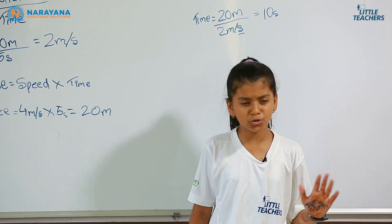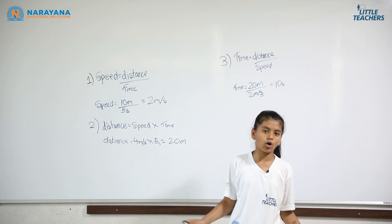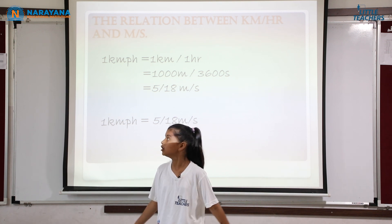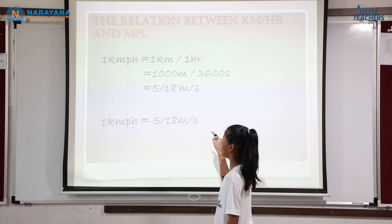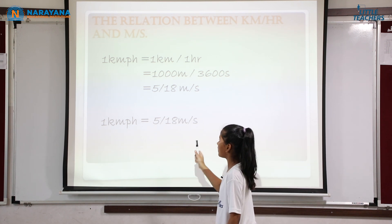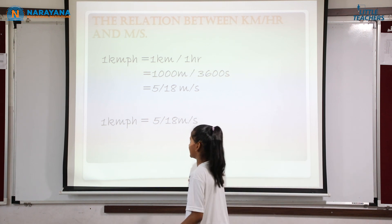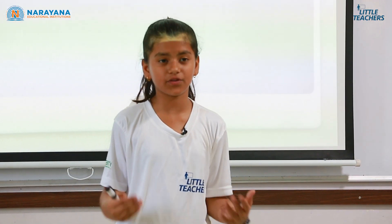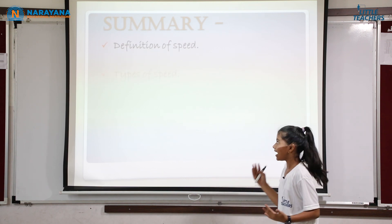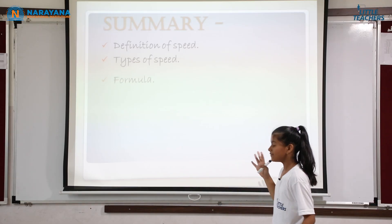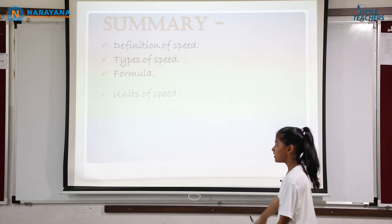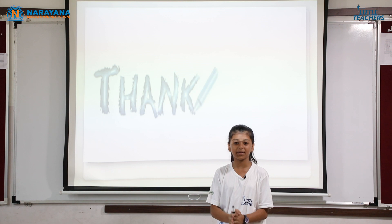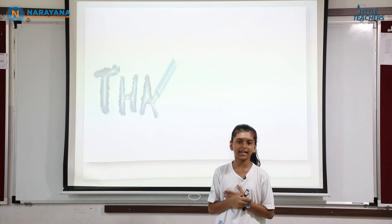These are some questions — you should always find more questions and solve them. To summarize: we have learned about speed, the two types of speed (uniform and non-uniform), formulas for speed, units of speed, and solved some questions. Thank you to Narayana for giving me such a wonderful opportunity to participate in Little Teachers.